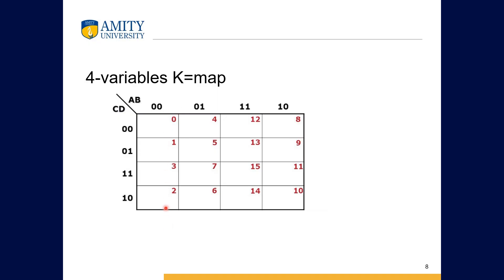The first column is filled, then the second, then the third column goes at the end, and then the fourth column — just because of the Gray code rule. Numbering can be done column-wise or row-wise: 0, 1, 3, 2 then 4, 5, 7, 6, then 8, 9, 11, 10, and 12, 13, 15, 14. The transpose of this map would swap rows and columns.